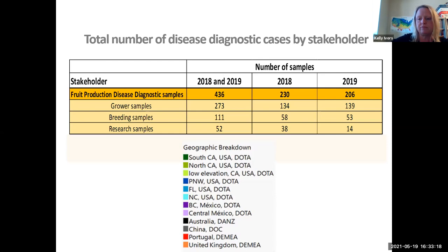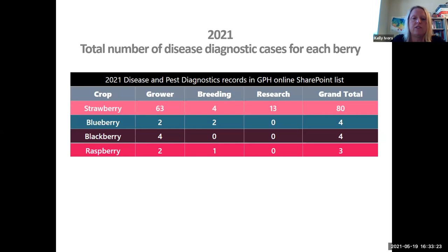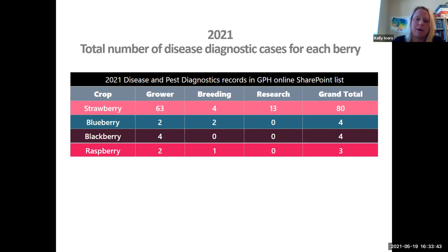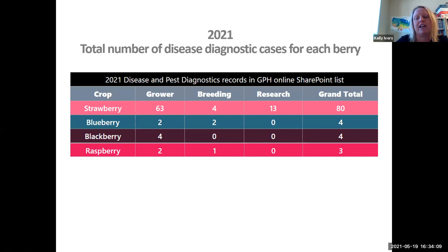Looking at our 2021 diagnostic load — I did a screenshot as of yesterday — we have been inundated with strawberry samples and it's not even the middle of the year yet, and we haven't seen some of our major soil-borne diseases pop up yet. Strawberries are definitely having a temper tantrum this year.